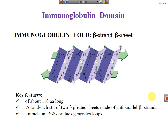Understanding the structure of the immunoglobulin domain is highly important. An immunoglobulin domain is made up of beta sheets, and these beta sheets are made up of anti-parallel beta strands. You can imagine a sandwich: two bread slices with butter between them, held together by a toothpick. The breads represent the beta sheets, the butter represents the hydrophobic moieties emerging from the two beta sheets, and the toothpick represents the disulfide bonds.